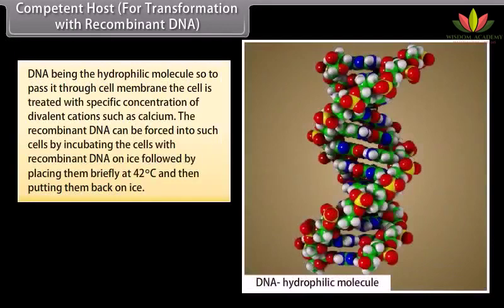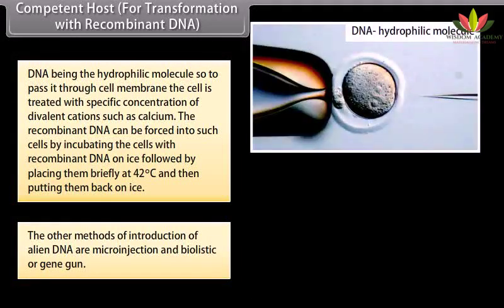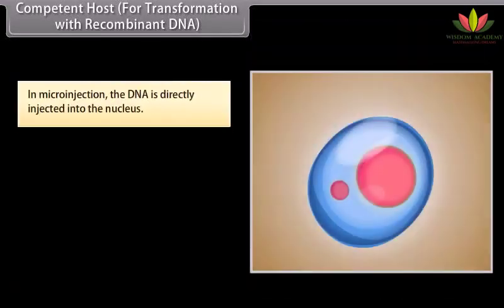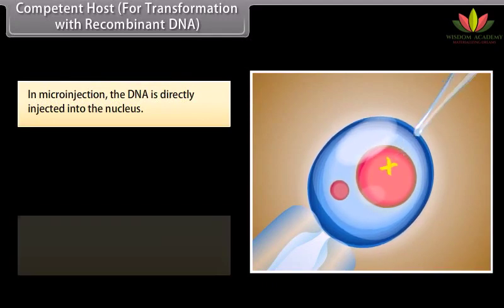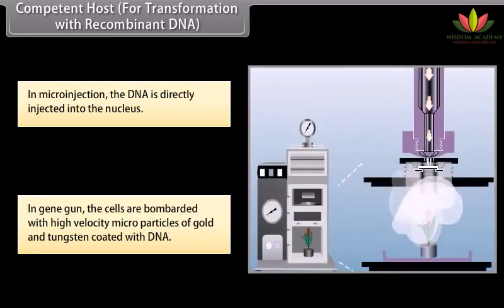Competent host for transformation with recombinant DNA. DNA being a hydrophilic molecule, to pass it through the cell membrane, the cell is treated with specific concentration of divalent cations such as calcium. The recombinant DNA can be forced into such cells by incubating the cells with recombinant DNA on ice, followed by placing them briefly at 42 degrees Celsius, and then putting them back on ice. Other methods of introduction of alien DNA are micro-injection and biolistics or gene gun. In micro-injection, the DNA is directly injected into the nucleus; in gene gun, the cells are bombarded with high-velocity microparticles of gold and tungsten coated with DNA.